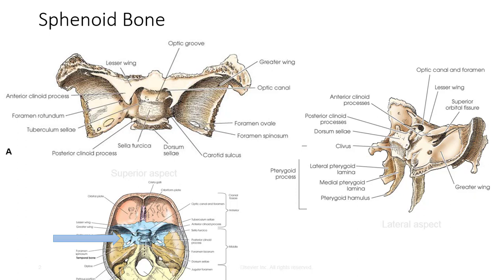The sphenoid bone is one of the more complex bones in the body. It's the irregular wedge-shaped bone that vaguely resembles a bat. It's located at the base of the cranium, anterior to the temporal bones and the basilar portion of the occipital, and consists of the body, two lesser wings, two greater wings, and two pterygoid processes.